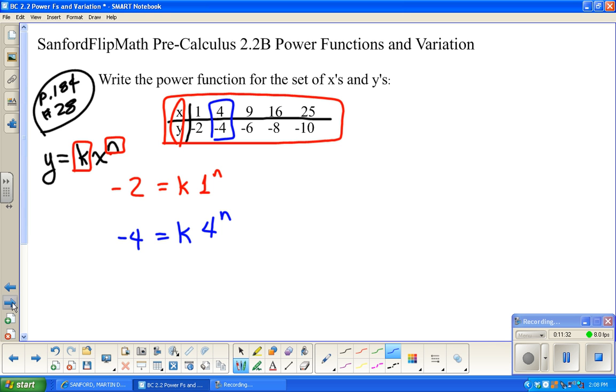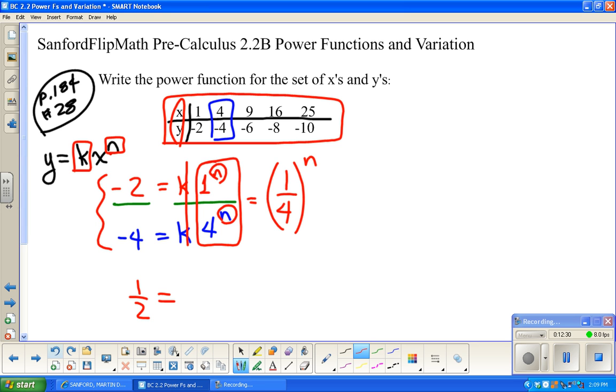Instead of adding equations to cancel things out, what we end up doing is actually dividing equations to cancel things out. So, I'm going to divide both sides of this top equation by the same thing. I'm going to divide by negative 4 on one side and by k times 4 to the n on the other side. Negative 2 divided by negative 4 is 1 half. These k's divide out. So, this becomes 1 to the n over 4 to the n. You can treat that as the whole fraction raised to that power. So, this is 1 fourth to the n.